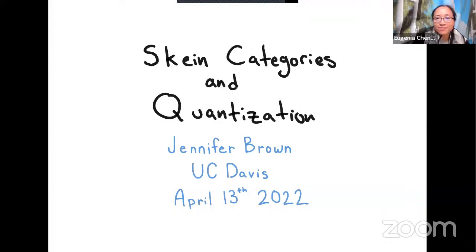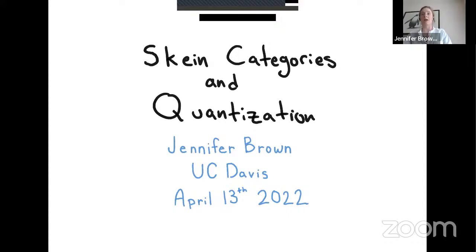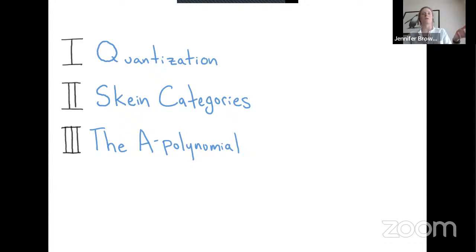I'd like to thank the organizers for letting me come, and especially Eugenia for meeting occasionally over the last couple of months to talk about this. So today I want to talk about skein categories and quantization. How I want this to go: first I'll say what I mean by quantization, then I'll talk about the skein categories that are going to show up, and finally I'll introduce an invariant called the A polynomial, which is the thing I'm trying to quantize.